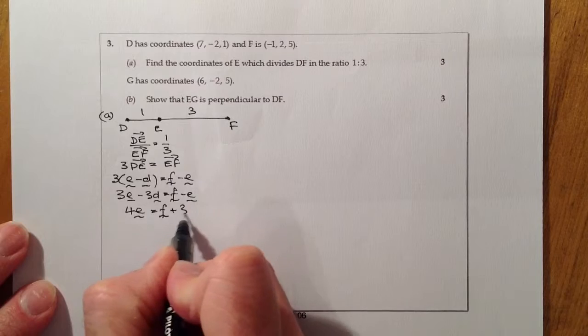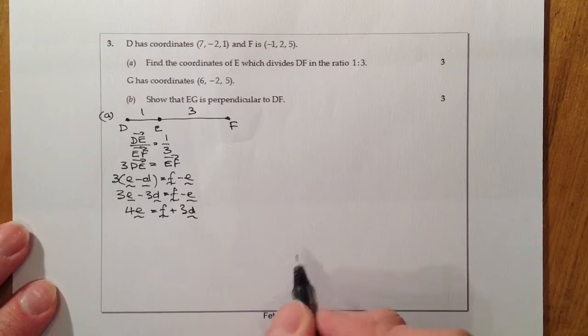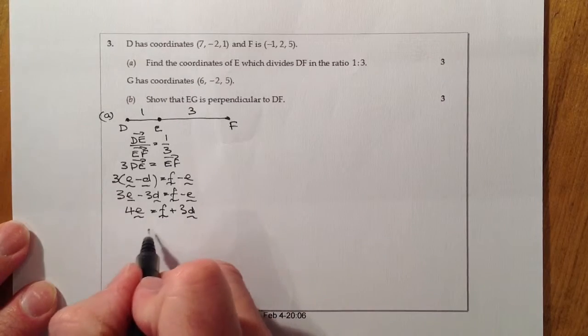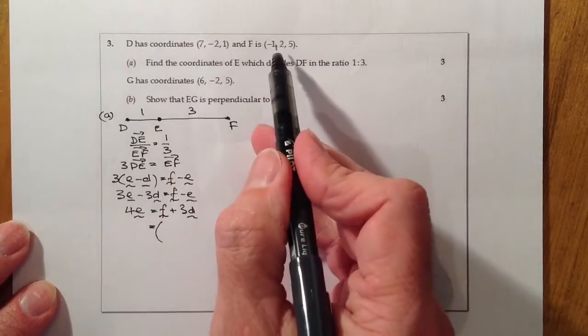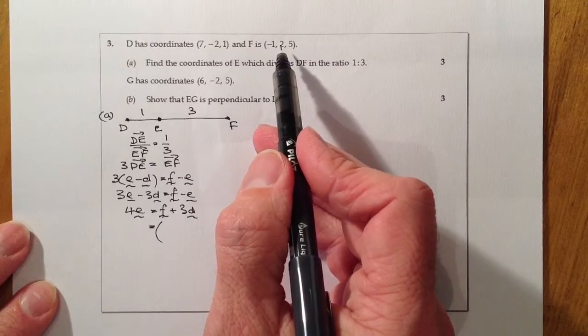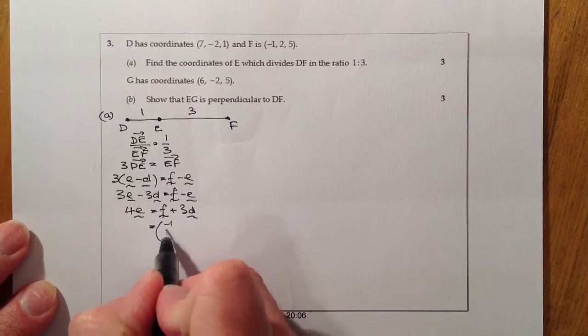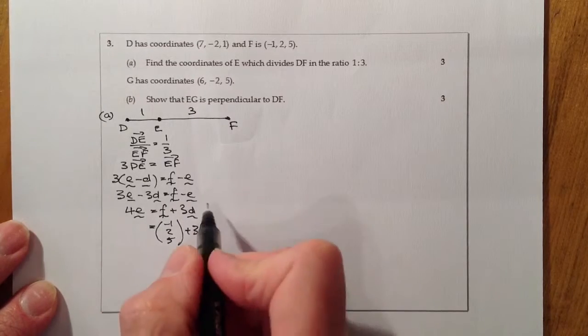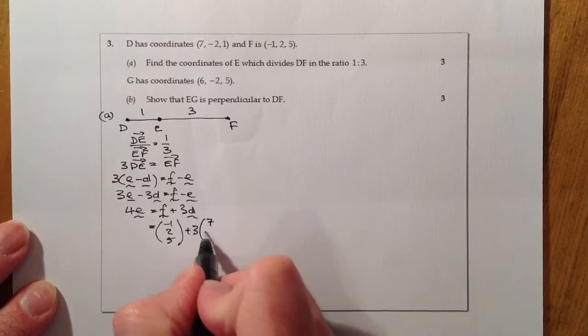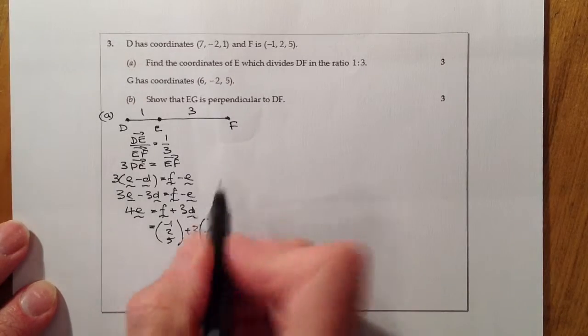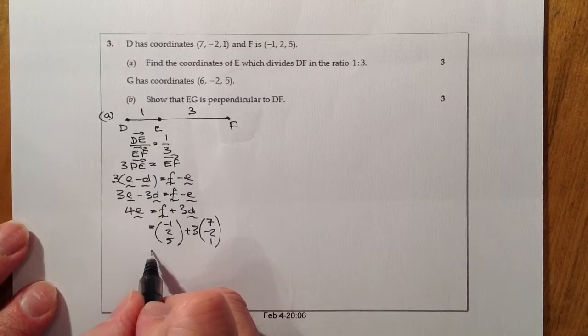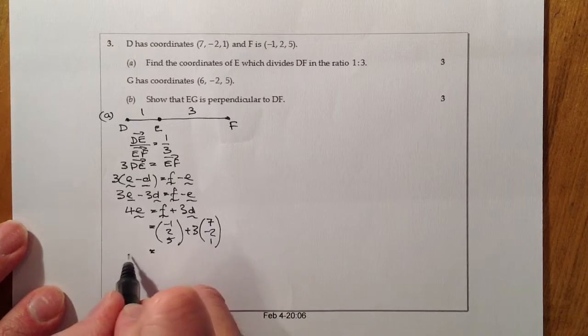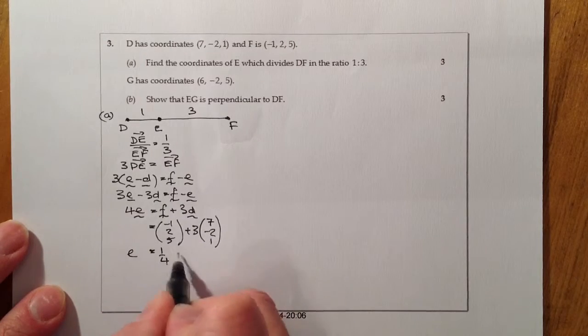I'm just going to substitute the values in at this stage. Looking at F, that's (-1, 2, 5), and I'm going to add to that three times (7, -2, 1) from D, which is up here.